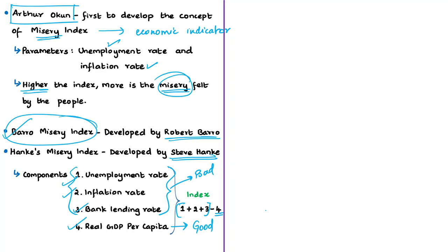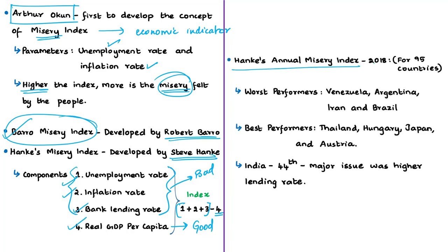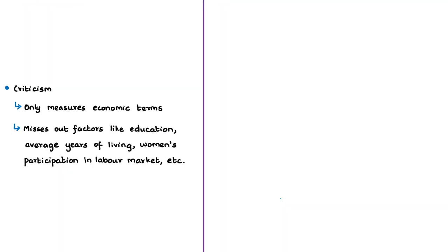For calculating the misery index, the good component is subtracted from the sum of the bad components to calculate the overall misery of an average citizen. The most recent misery index released was Hanke's Annual Misery Index of 2018, calculated for 95 countries. According to this index, the worst performing countries are Venezuela, Argentina, Iran, and Brazil. The best performing countries are Thailand, Hungary, Japan, and Austria. India is ranked at 44th position, with the major issue being higher lending rates. However, these indices were criticized because they measure misery only in economic terms and do not consider other development factors such as education, average years of living, or women's participation in the labor market.